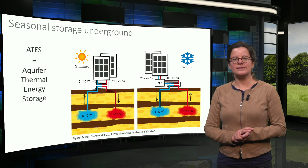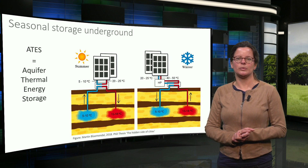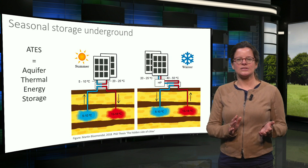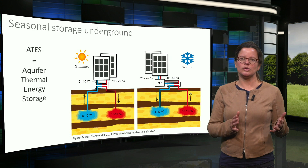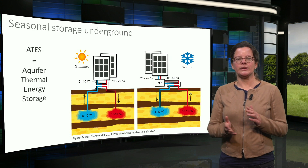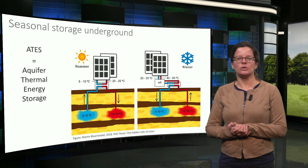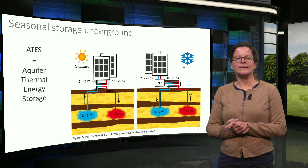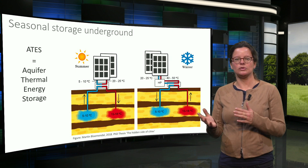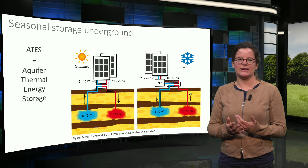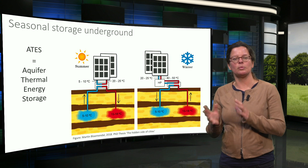In these systems, two wells are drilled, which will become a cold well and a warm well. In summer, groundwater is extracted from the cold well. It passes through a heat exchanger in order to cool a building. The heat from the building is transferred to the groundwater, which is then injected into the warm well.